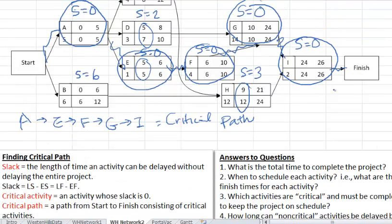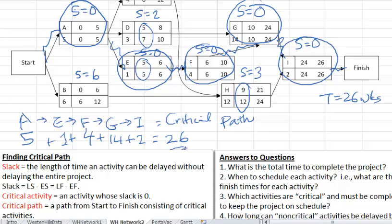So here, remember that the length of the project was 26 weeks. So let's see if the length of this path matches up that number. By length of the path, we mean if we were to add up the durations of the activities on that path, the sum would be the length of that path. So here we have 5, and then 1, and then F is 4, G is 14, and I is 2. So that gives me 6 plus 4 is 10, plus 14 is 24, plus 2 is 26 weeks. So length of the critical path is the same as a project time. That's not a coincidence. That is always the case.